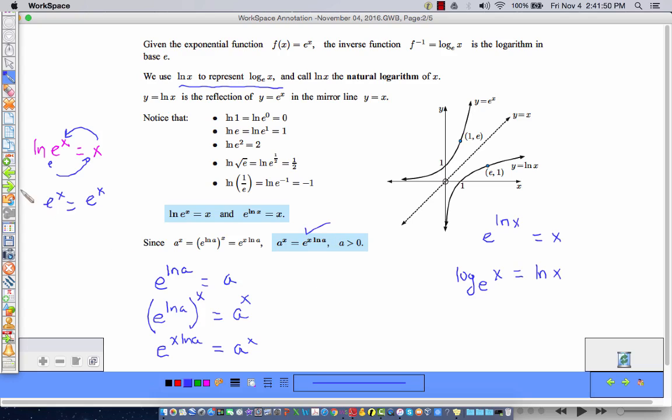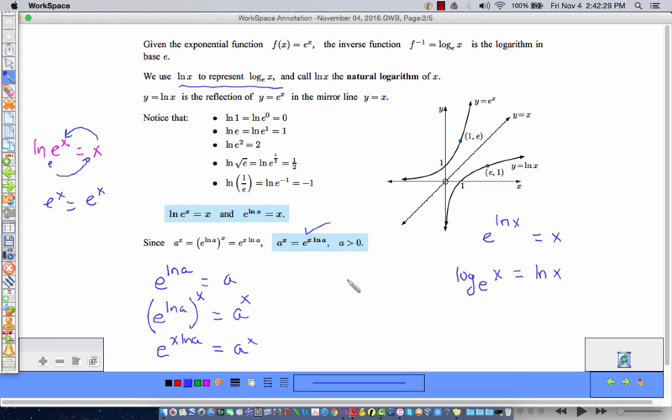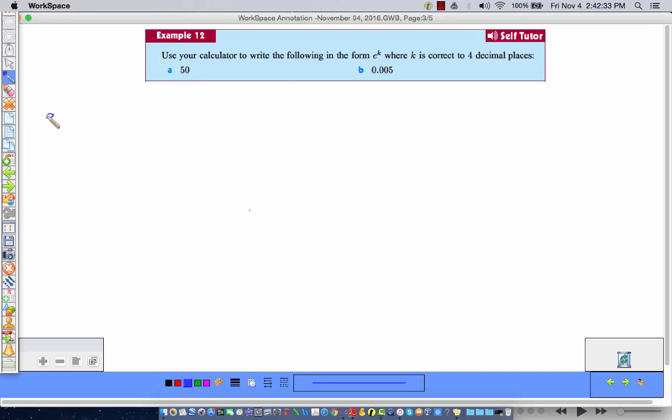So let's just check out a couple of examples. Use your calculator to write the following in the form E to the K where K is correct to four decimal places. Well, we know from here, we know that E to the ln of X is equal to X. So let's write that out. E to the natural log of X is equal to X.